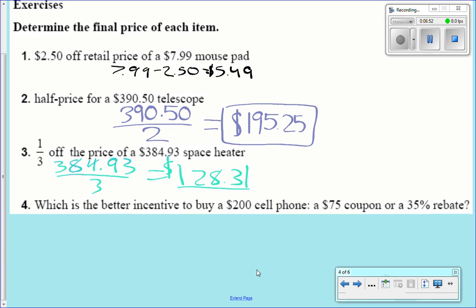Which is the better incentive, Keegan, you're up, to buy a $200 cell phone using the $75 coupon or a 35% rebate? You need to scroll down a little bit? There you go.